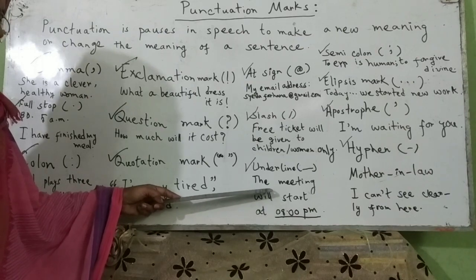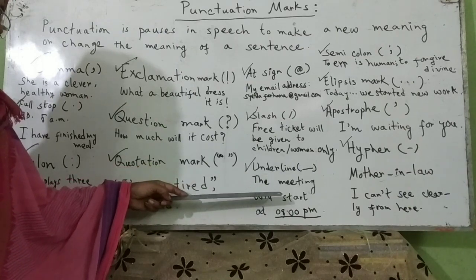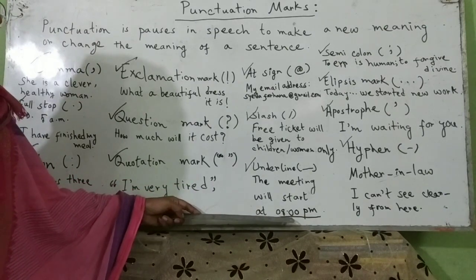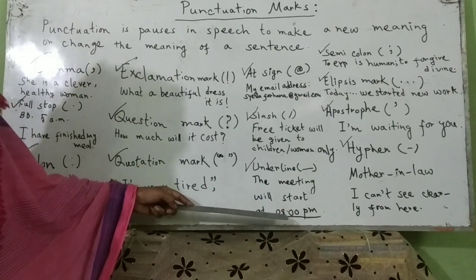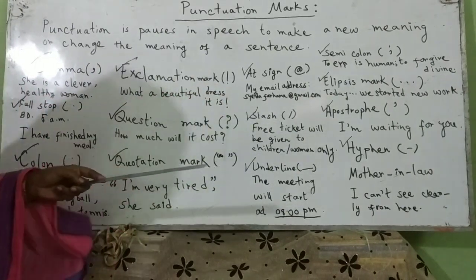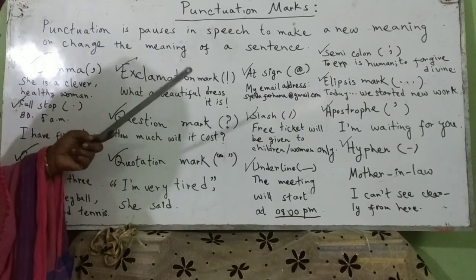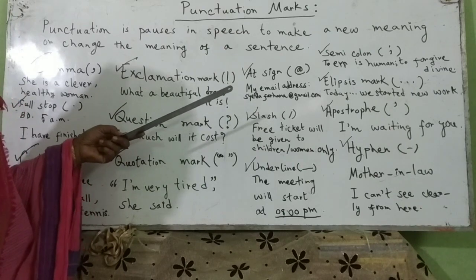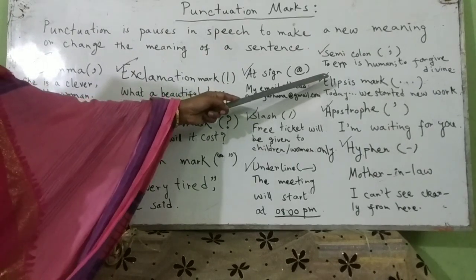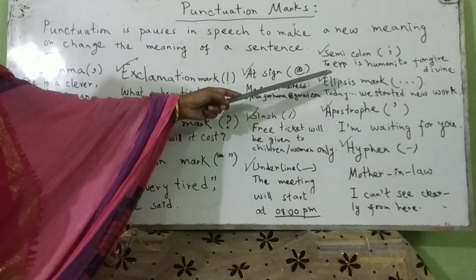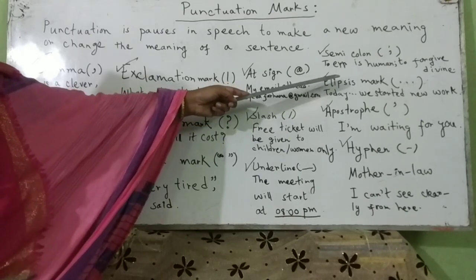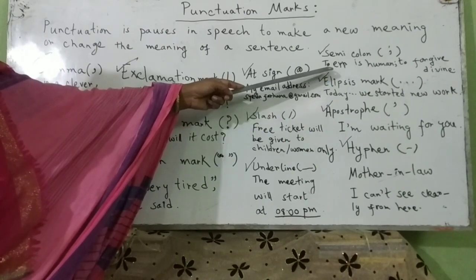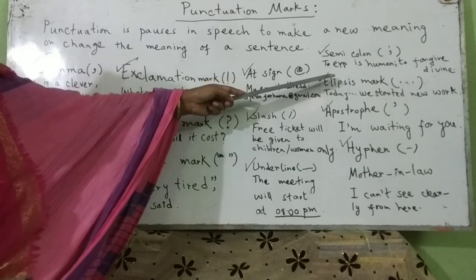The meaning will start at 8 p.m. There is a semicolon. In this case, you can see the same clause joined without the use of a coordinating or subordinating conjunction. The semicolon connects two independent clauses.